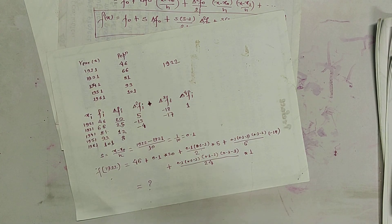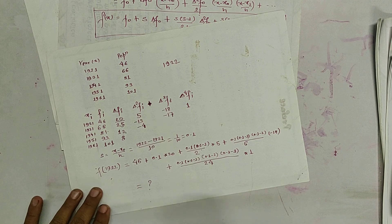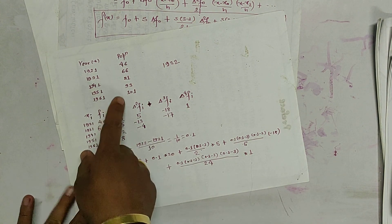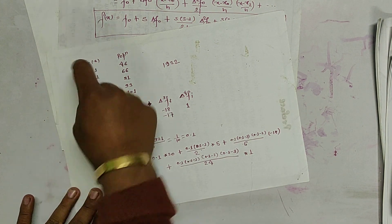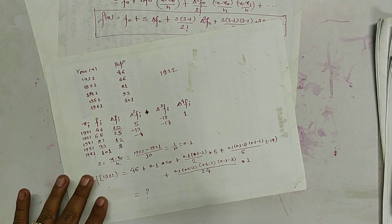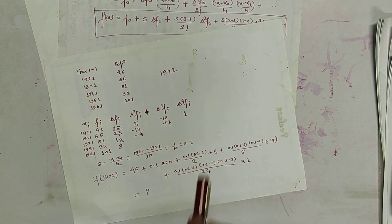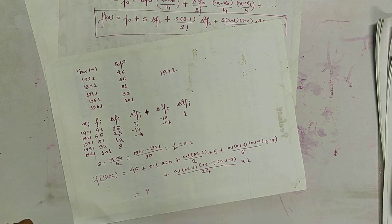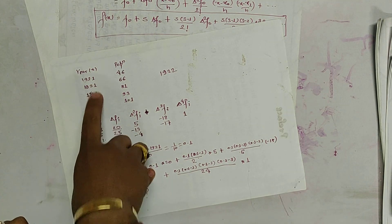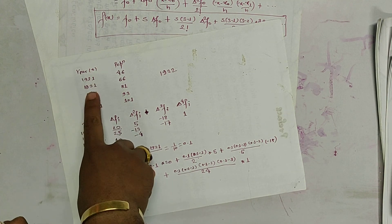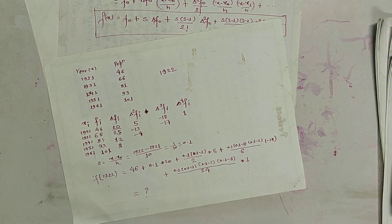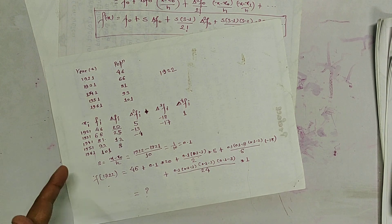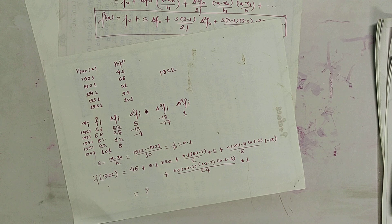In this way we have found a value within this range. Note that Newton's forward interpolation is used for evenly spaced or evenly distributed data, like in this example where the difference is 10. In the next video I am going to discuss Gauss forward interpolation. Thank you.